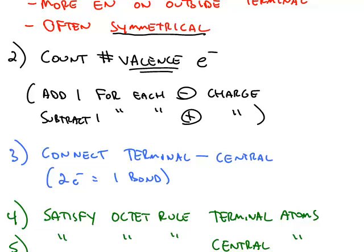Step number two is count the valence electrons. Only the valence electrons are part of the bonding, so it's important not to count all of the electrons. If the chemical has a charge, you either have to add or subtract an electron, depending on whether it is an anion or a cation.